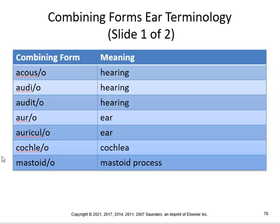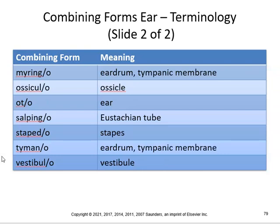The mastoid is the mastoid process — a bony protuberance behind your ear. You can get mastoiditis, inflammation of the mastoid process. 'Myring-' means eardrum/tympanic membrane, so myringotomy is an incision of the eardrum, and myringitis is inflammation of the eardrum. 'Ot-' means ear, so otic means pertaining to the ear; otomycosis is an abnormal condition of fungal infection in the ear. 'Salping-' refers to the Eustachian tube — salpingopharyngeal means pertaining to the Eustachian tube and throat; salpingitis is inflammation of the Eustachian tube. 'Stapid-' refers to the stapes, so stapedectomy is removal of the stapes bone.